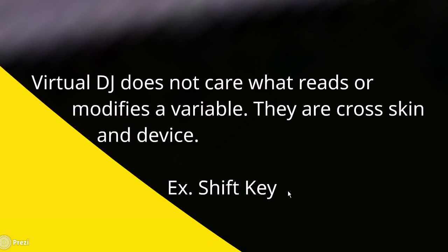Virtual DJ doesn't care what reads or modified a variable — they are cross-skin and cross-device. For example, you can program a shift key to activate a variable, and then your keyboard, controller, and skin can all read and change their actions based on that shift key. So a load button might load a track normally, but if you're holding shift and press the button, it unloads the track — even if the shift key is on one controller and the load button is on another.